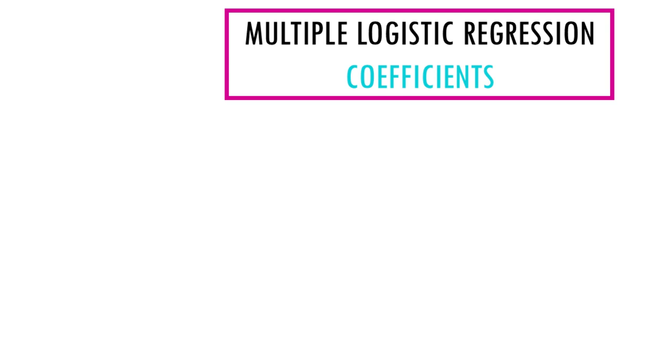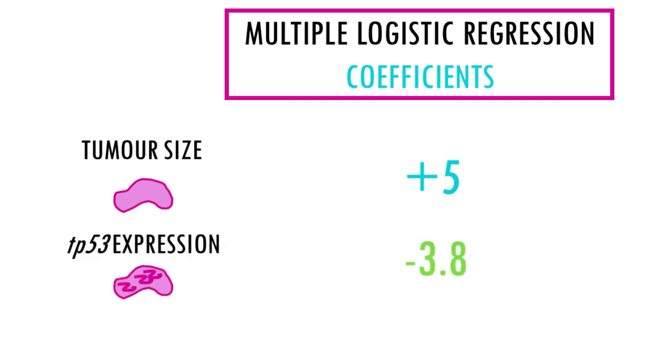The coefficients for each predictor tell us the impact of that predictor on the likelihood or probability that the tumor is malignant. For example, a positive coefficient for tumor size suggests that larger tumors are more likely to be malignant. While a negative coefficient for the biomarker expression, TP53, suggests that higher expression levels might be associated with lower malignancy probability.